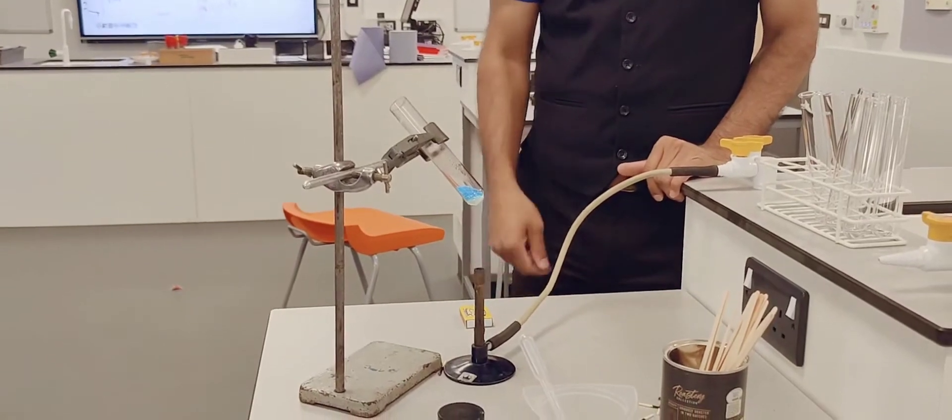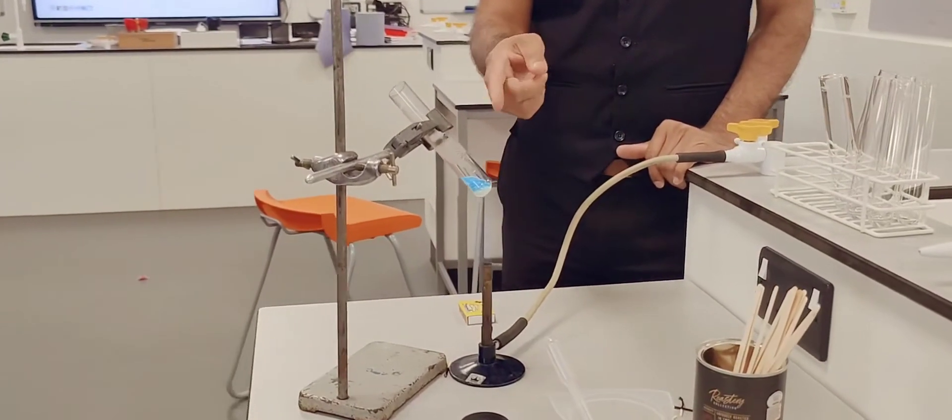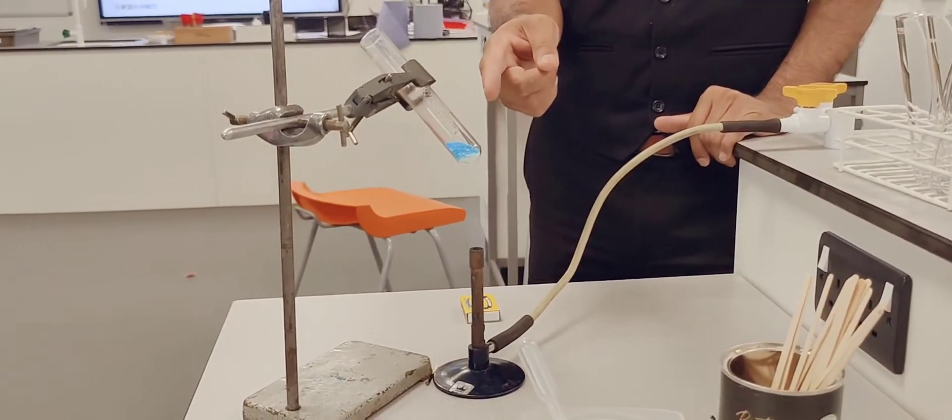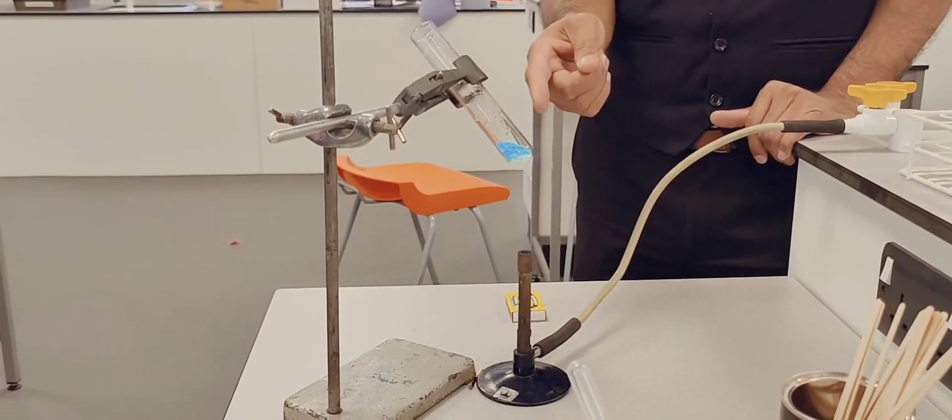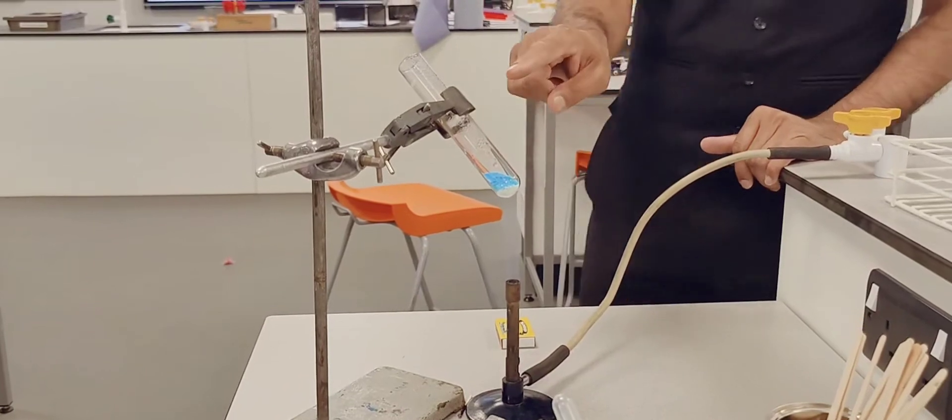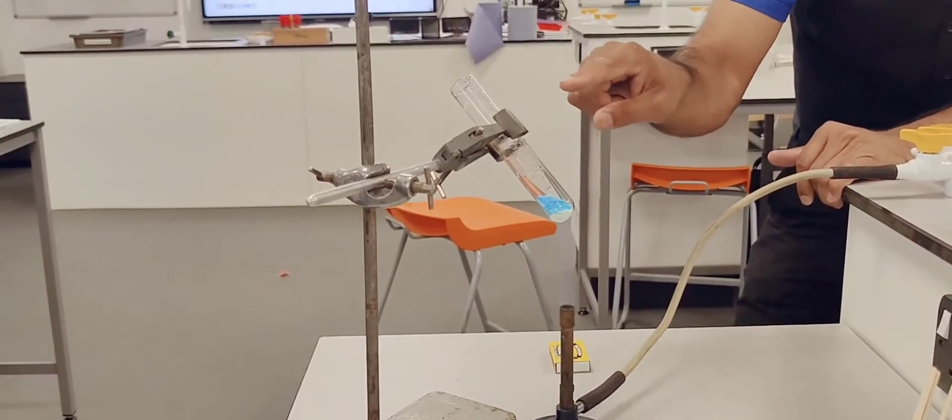If you can see, as the reaction is progressing, the blue color hydrated copper sulfate is converting into anhydrous copper sulfate and you can see some of the moisture there.